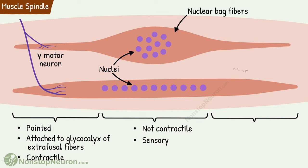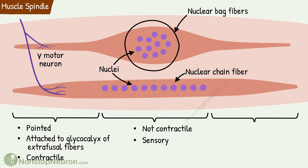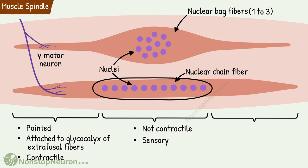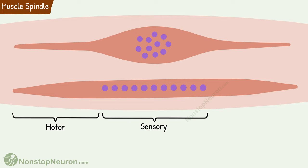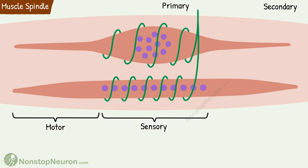The two types are nuclear bag fibers and nuclear chain fibers. Nuclear bag fibers have nuclei concentrated in a wide central portion, like a bag. There are 1 to 3 such nuclear bag fibers in a muscle spindle. Nuclear chain fibers have nuclei aligned in a chain, and there are 3 to 9 such nuclear chain fibers in a muscle spindle. Now let's talk about the nerve supply of the muscle spindle. The muscle spindle has both sensory and motor nerve supplies. The sensory innervation is in the central region, as it's the main sensory area. There are two types of sensory endings: primary endings and secondary endings. The primary ending encircles the central portion of each intrafusal fiber, receiving information from both nuclear bag fibers and nuclear chain fibers. This is a type 1a fiber.